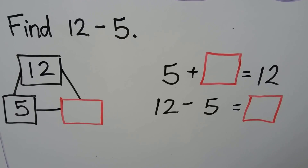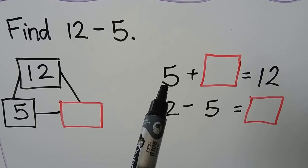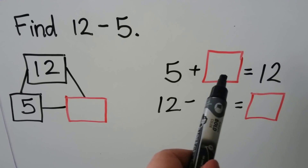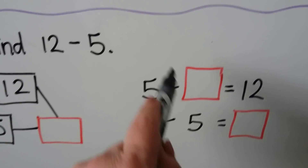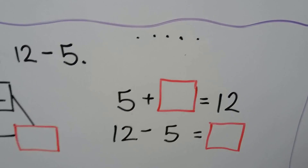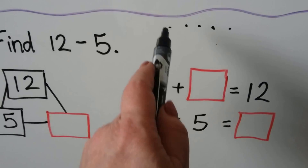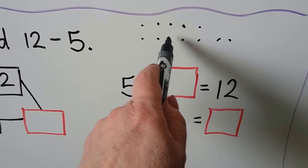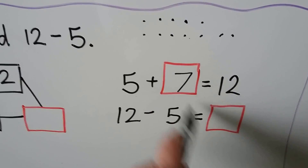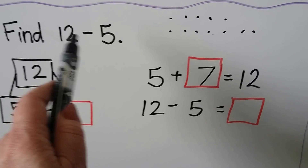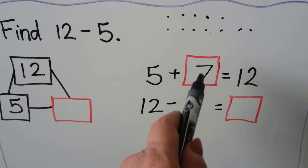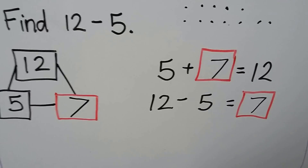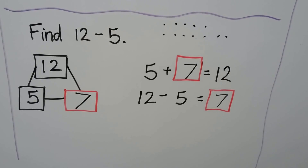Find 12 minus 5. We can find 12 minus 5 by using a related addition fact: 5 plus some number equals 12. If we have 5 counters — 1, 2, 3, 4, 5 — how many more counters would we need to add to get up to 12? We have 5, 6, 7, 8, 9, 10, 11, 12. How many counters did we make? 1, 2, 3, 4, 5, 6, 7. So 5 plus 7 is equal to 12, which means 12 minus 5 is equal to 7. The missing unknown number is a 7.